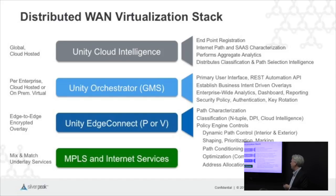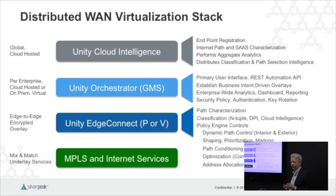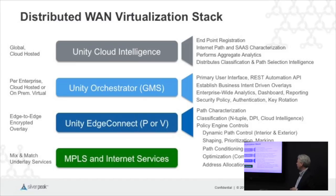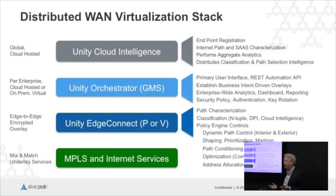The policy engine also controls cross-functionality like shaping, prioritization, and marking. It controls our path conditioning: forward error correction, reordering, and MTU magic. In our networks, if you want to do jumbo frames over the WAN, we can do that — we have all the fragmentation and reassembly capabilities. Optionally, you can add optimization: the things classically associated with WAN optimization like compression, deduplication, and proxies. This is not part of the standard base — it's something you can buy up to, adding the WANOP flavor onto your SD-WAN base.